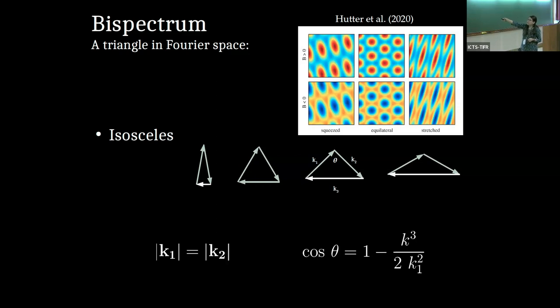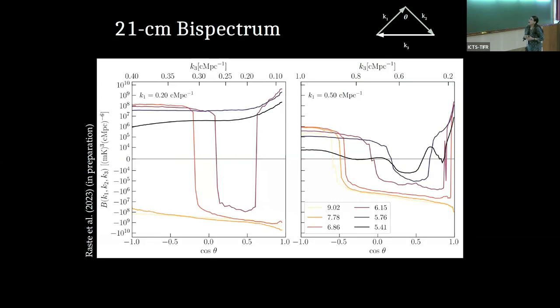So bispectrum is essentially a triangle in Fourier space, but this triangle can be of any shape and size, but we limit our work to isosceles triangles. Now, for isosceles triangles, we can have two sides of the triangles are equal, but the third side can be parameterized with a theta parameter. And different triangles are sensitive to different shapes of the field. For example, equilateral triangle would be most sensitive to spherical regions. So this plot was taken from Hutter et al. And so these are some of the results, finally. On the left-hand side we have, these are results for isosceles plots. On left-hand side, we have k1 sides, the equal sides are 0.2. And on right-hand side, it's 0.5 megaparsec inverse. On the x-axis is the cos theta.